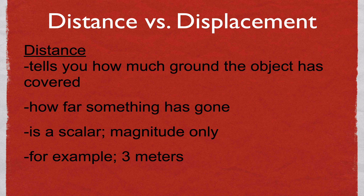Distance just tells you how much ground an object has covered — it's really just how far you have gone. It's a scalar, which means it's only described by its magnitude, the number, and of course the units. For example, you could say an object has gone 3 meters, or maybe 100 kilometers, or maybe 0.5 centimeters. It's just how far the object has gone, the total distance something has covered.